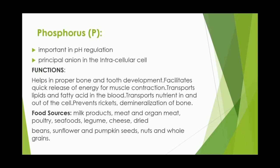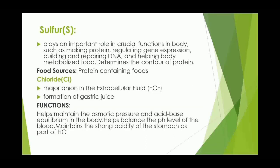Phosphorus: important in pH regulation and the principal anion in the intracellular fluid. Functions: helps in proper bone and tooth development, facilitates acute release of energy for muscle contraction, transports lipids and fatty acids in the blood, transports nutrients in and out of cells, and prevents demineralization of bone. Food sources: milk and milk products, meat, organ meat, poultry, seafoods, legumes, cheese, dried beans, sunflower seeds, pumpkin seeds, nuts, and whole grains. Sulfur plays an important role in making protein, regulating gene expression, building and repairing DNA, and helping the body metabolize food; determines the contour of protein. Food source: protein-containing foods.